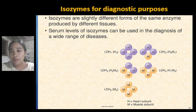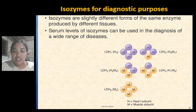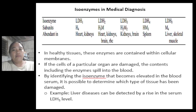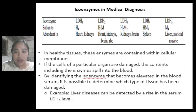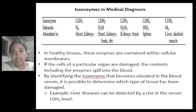Isozymes are slightly different forms of the same enzyme produced by different tissues, and serum levels of isozymes can be used in the diagnosis of a wide range of diseases. A given substrate may be acted upon by a number of different enzymes sharing the same reaction and products — individual members of such a set are known as isoenzymes. In healthy tissues, enzymes are contained within cellular membranes, but if cells of a particular organ are damaged, the contents spill into the blood. For example, liver or skeletal muscle disease can be detected by a rise in serum LDH5 levels.